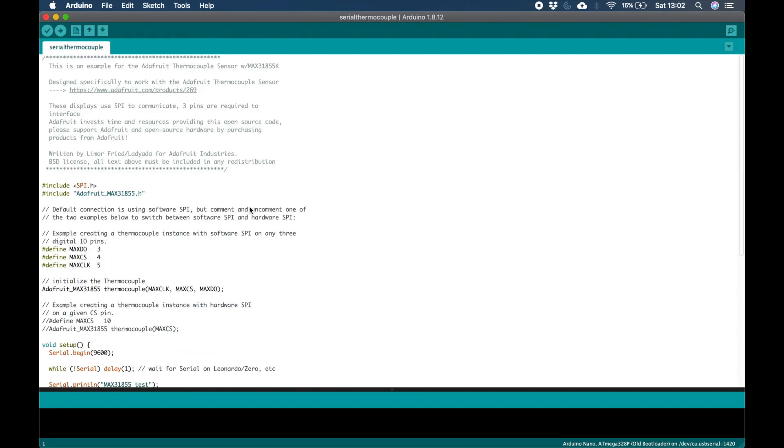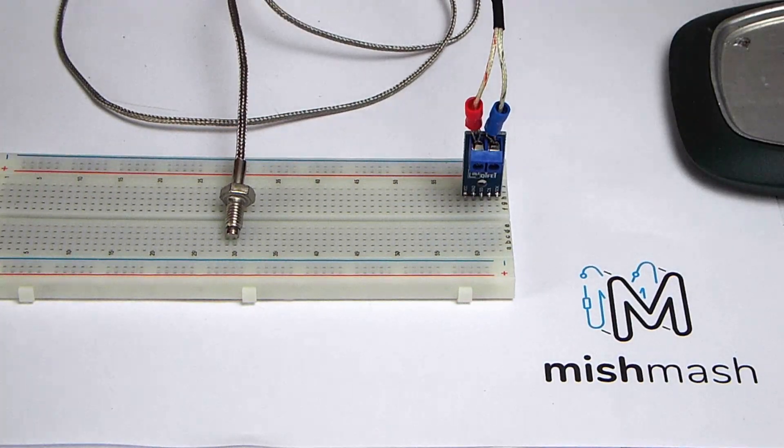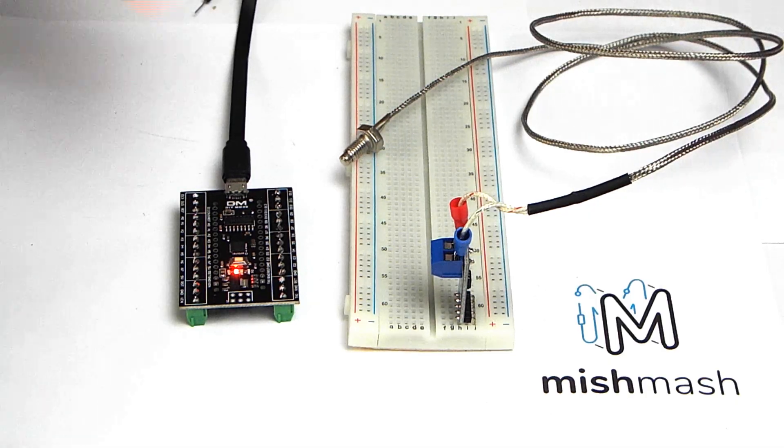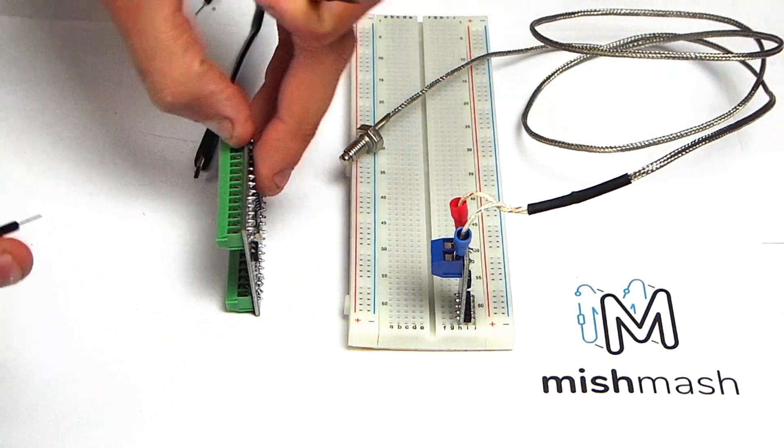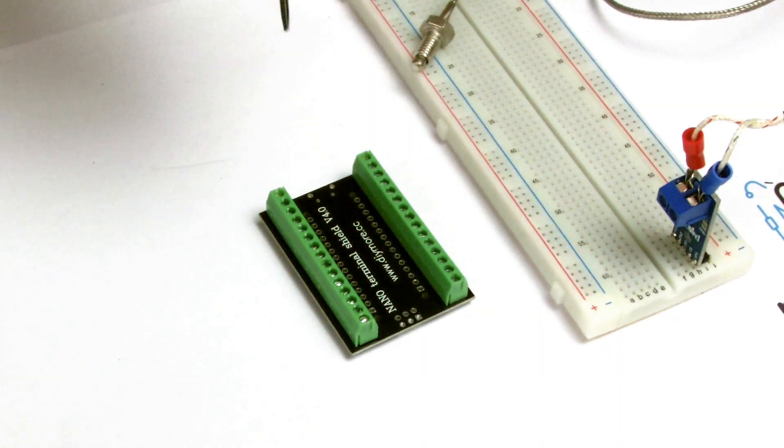I'm going to connect this breakout board to the Arduino Nano using the pins defined in this example. So you can see data out is 3, chip select is 4 and the clock pin is 5. Today we are using a replica Arduino Nano and I like this model because of the screw terminations that I have soldered on underneath.